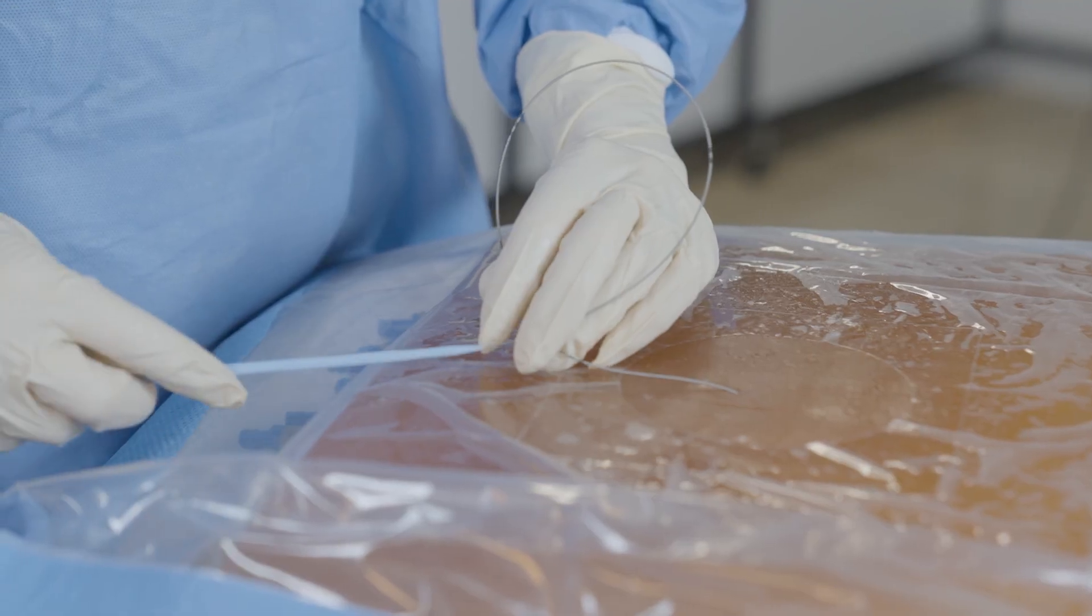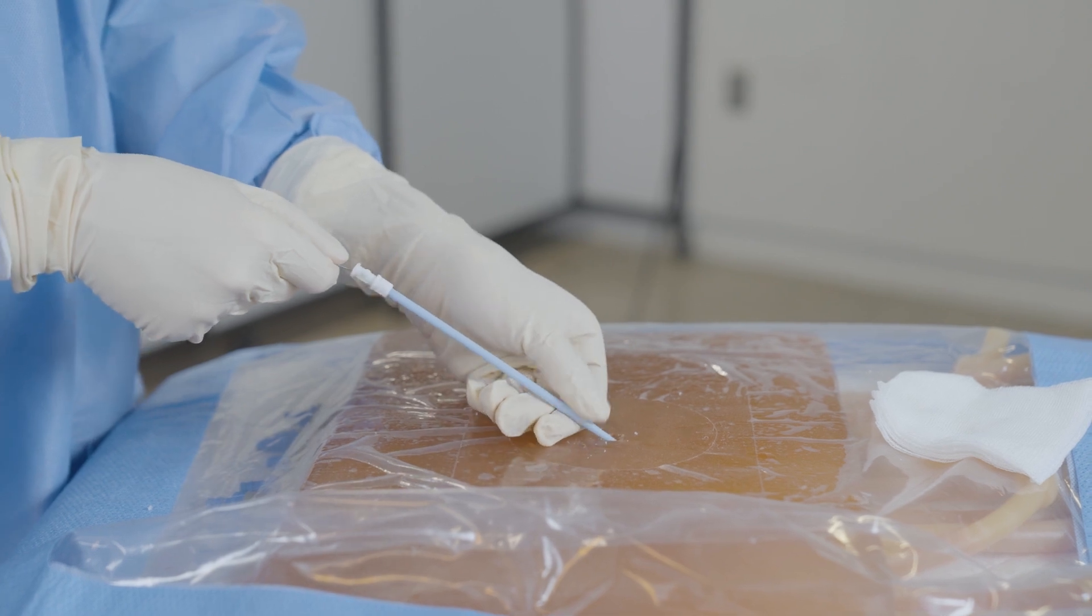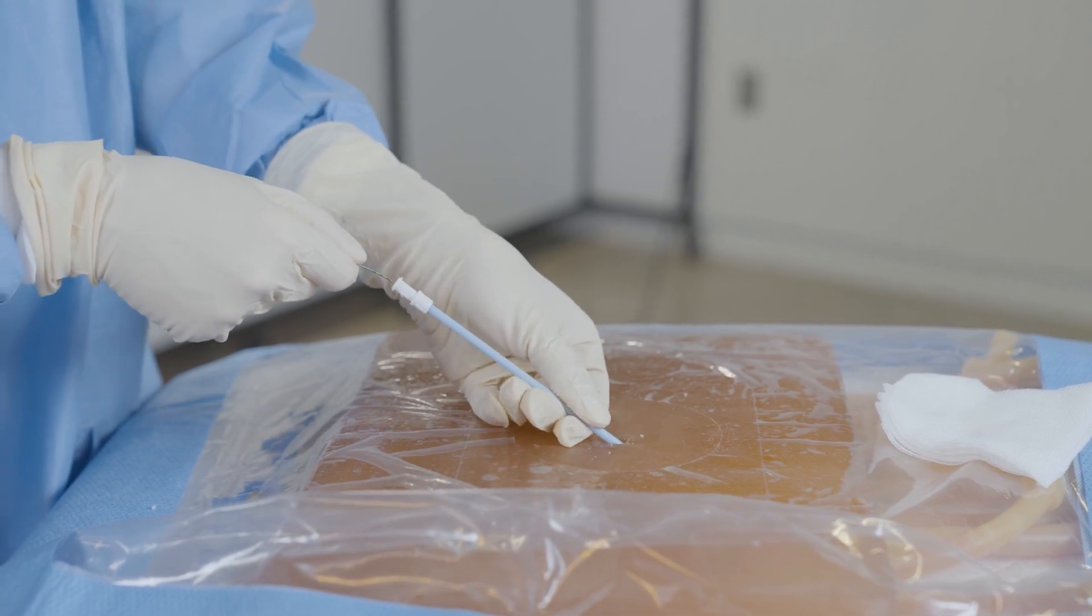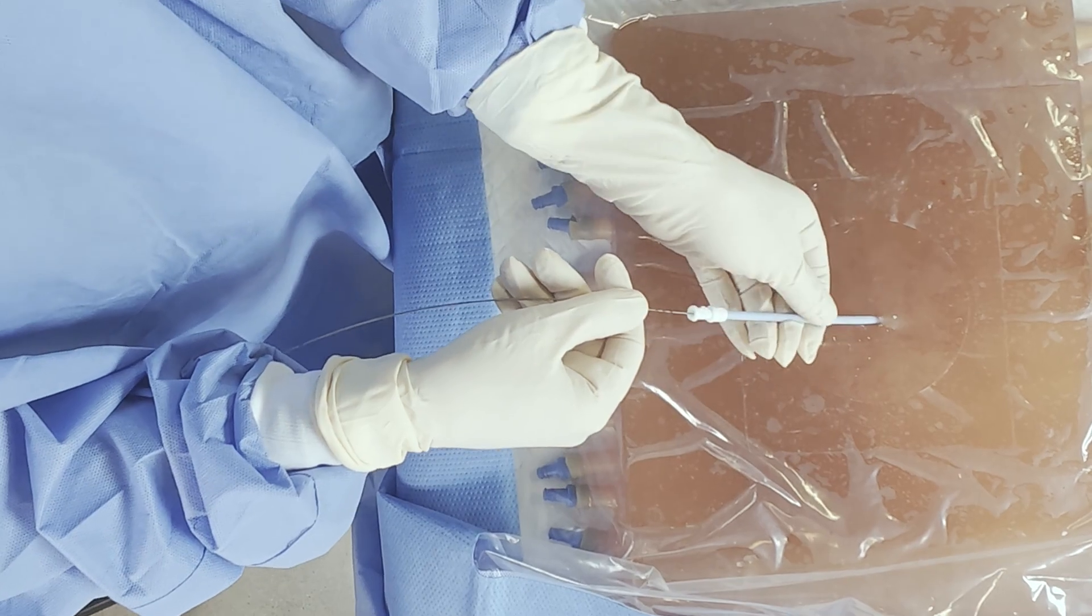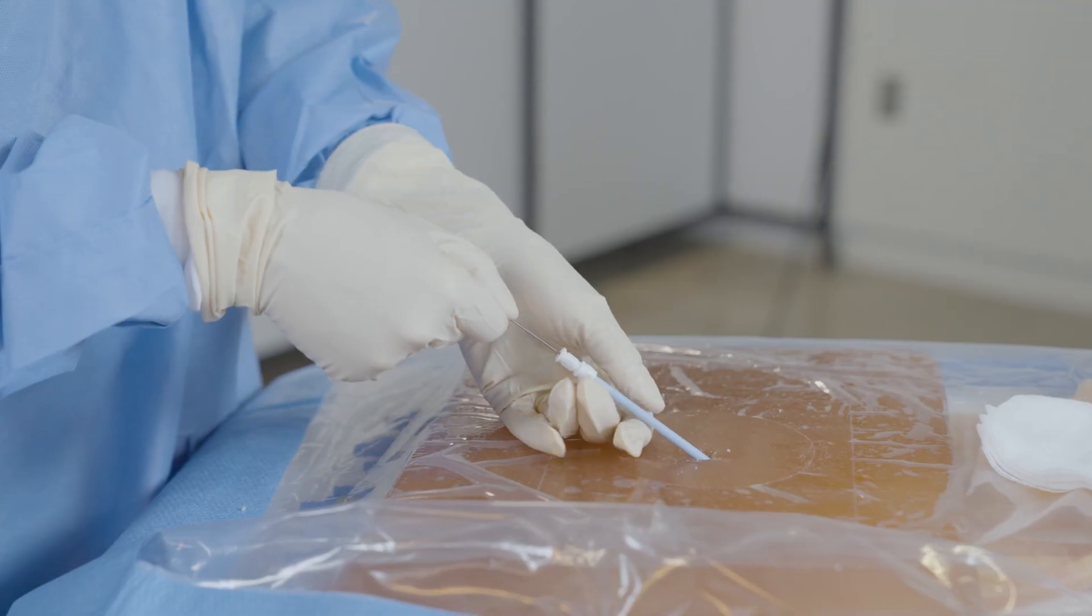Take the smaller of your two dilators and advance the dilator over the guide wire. The dilator should enter the skin at the same angle as your guide wire. Advance the dilator in a twisting motion about half a centimeter using your first three fingers at the skin until resistance is felt.